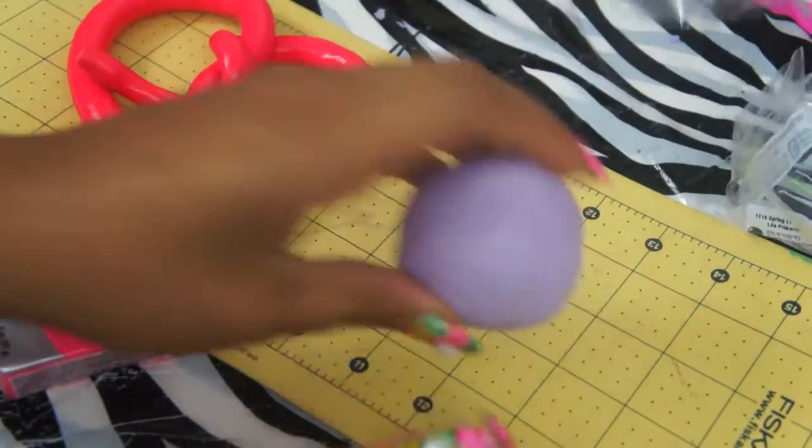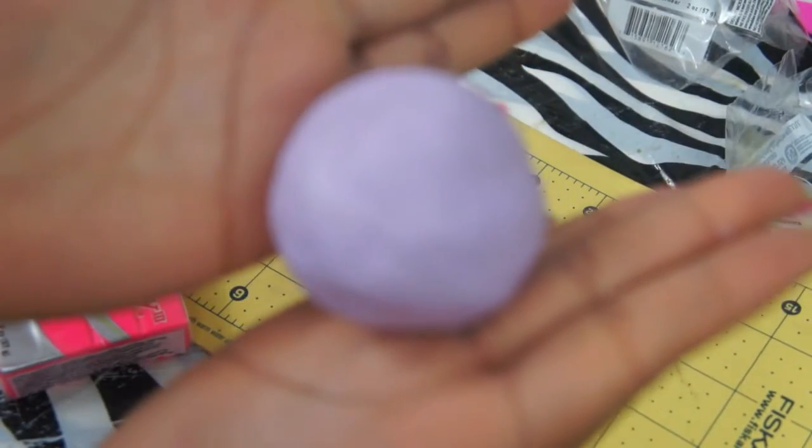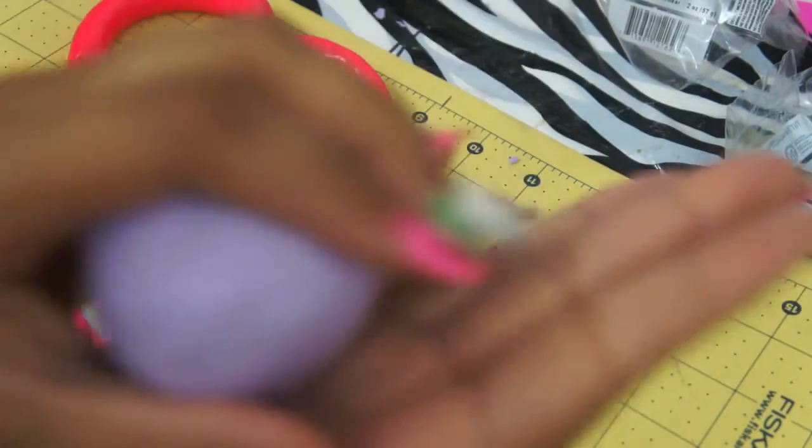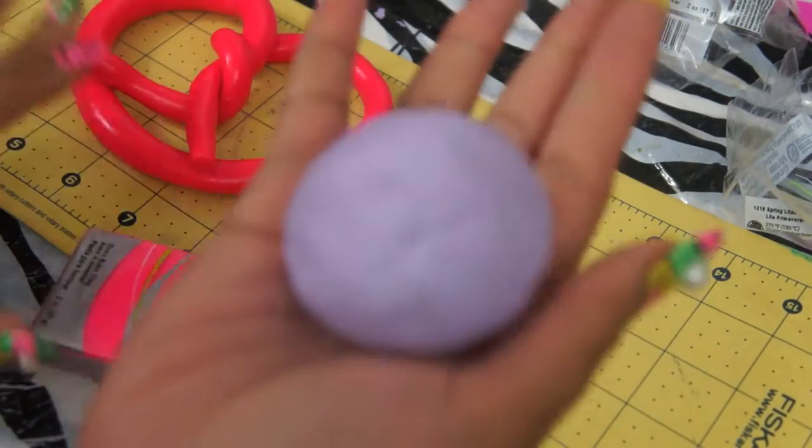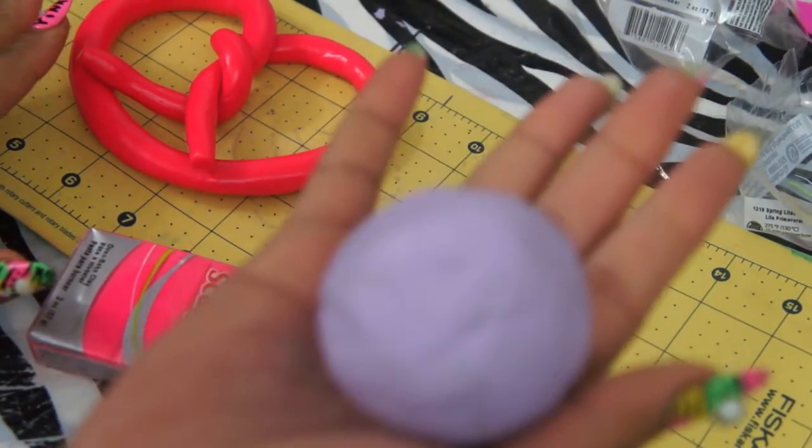Two packs. So first, what I did was roll this into a nice ball. Okay, so that's what you're going to have to do. You're going to add both of the packs together and roll it into a ball. It's going to look like this.